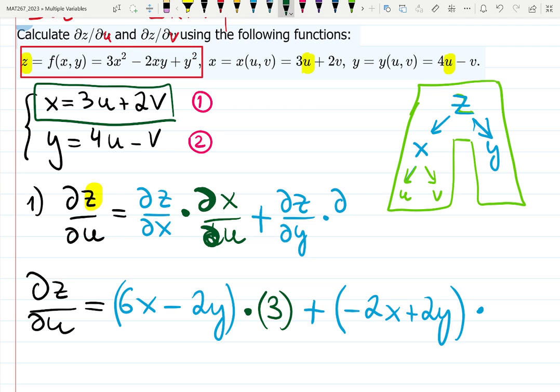Partial derivative, hopefully in green, of what? Dy/du. Sometimes people say partial y, partial u. That's just faster in English, in English at least. And then I'm looking at equation number 2 this time. We did not use it yet. Derivative of that function with respect to u is 4, and I'm done. And I'm done here. How about that?